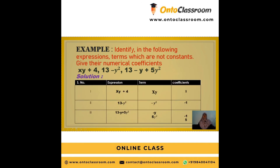Example — identify the expressions and terms and give their numerical coefficients. For the expression xy + 4: the term is xy and its coefficient is 1. For 13 - y²: the term is -y² and its coefficient is -1. For 13 - y + 5y²: the terms are -y and 5y², and their coefficients are -1 and 5. This example gives clear clarification about constants, terms, expressions, and coefficients.